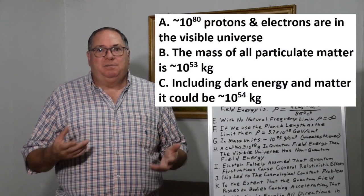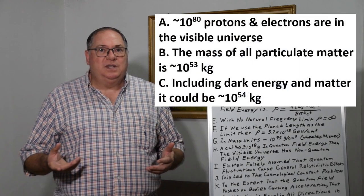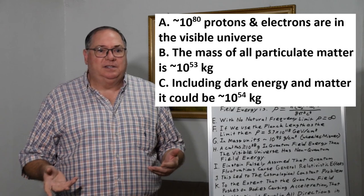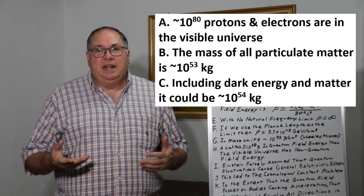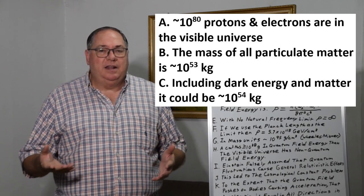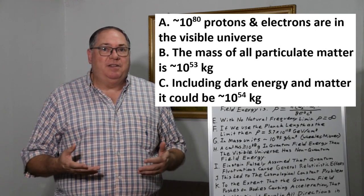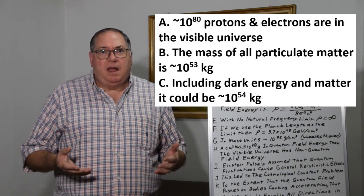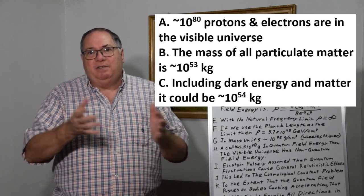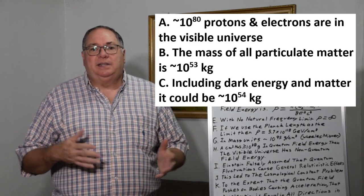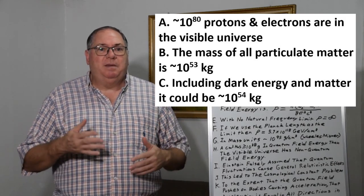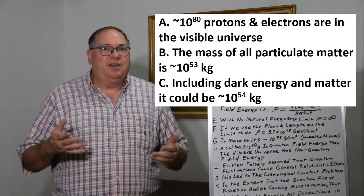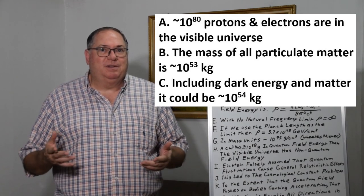One of the principal estimates you see for the number of particles in the visible universe is 10 to the 80th protons and electrons. And you'll also see an estimate of the particulate matter in the universe being 10 to the 53rd kilograms. Even if we say the Hubble Deep Field showed there's even more galaxies, it's possibly 10 to the 54th. Or if you want to include dark energy and dark matter, 10 to the 54th kilograms.